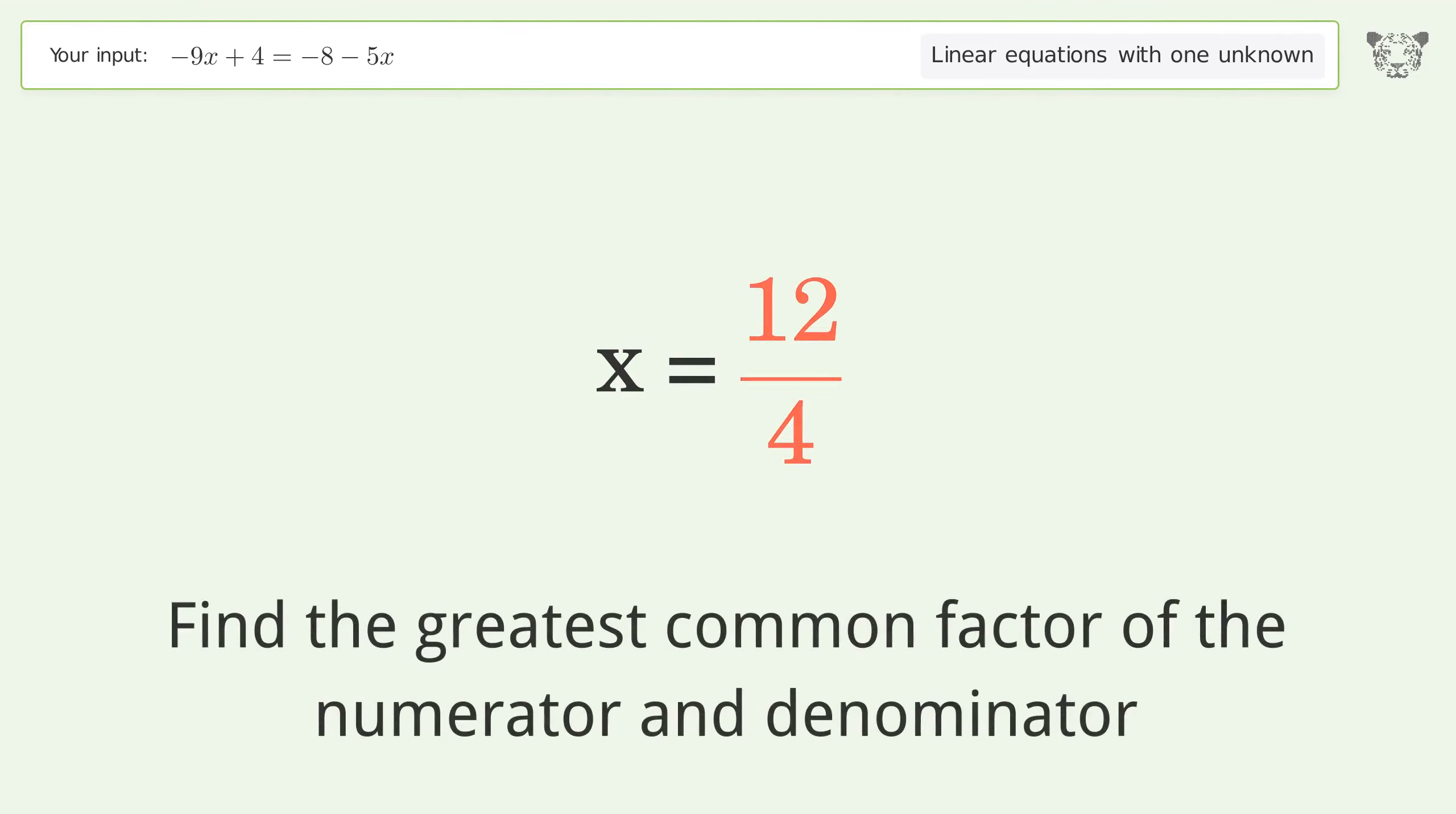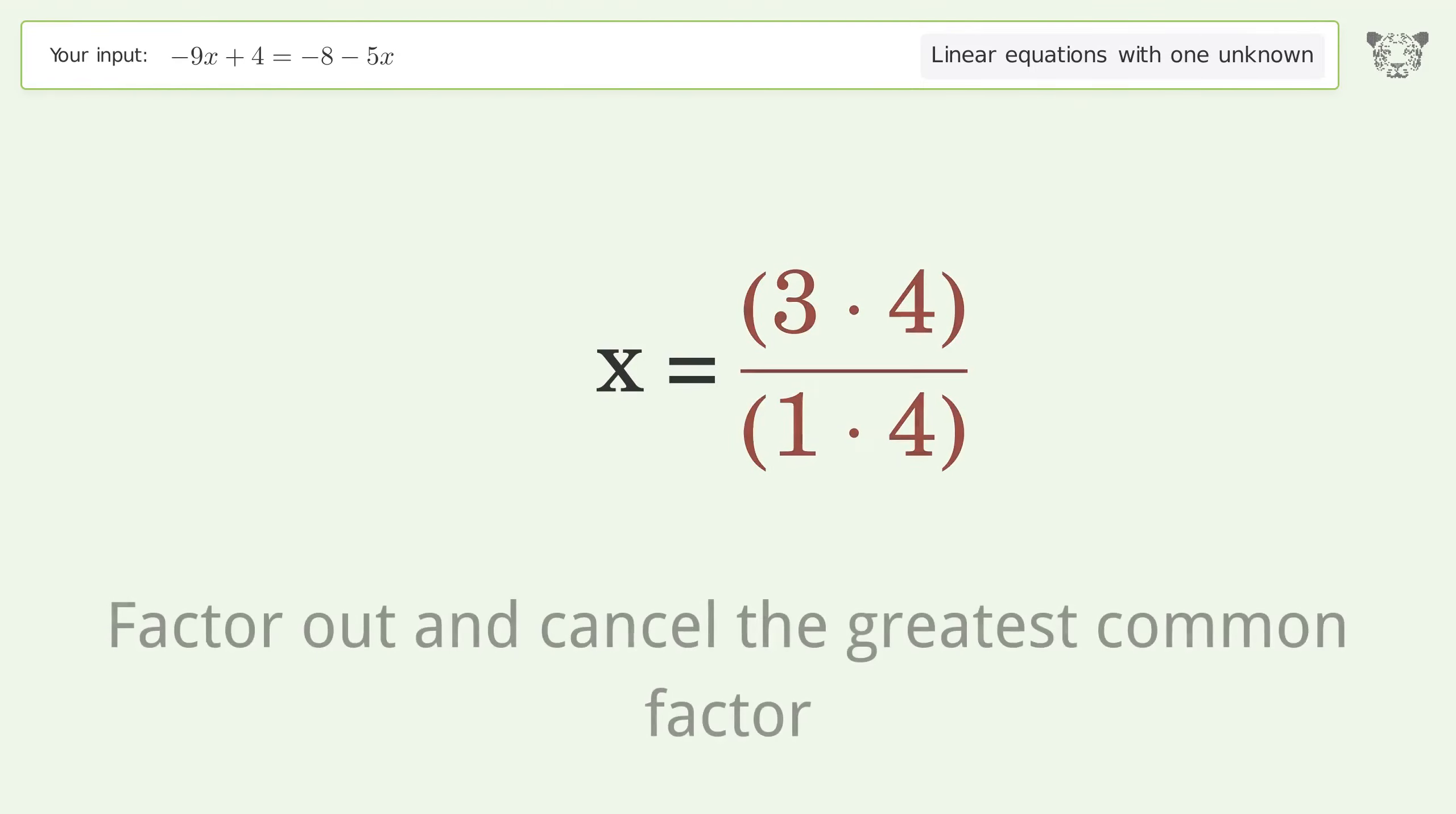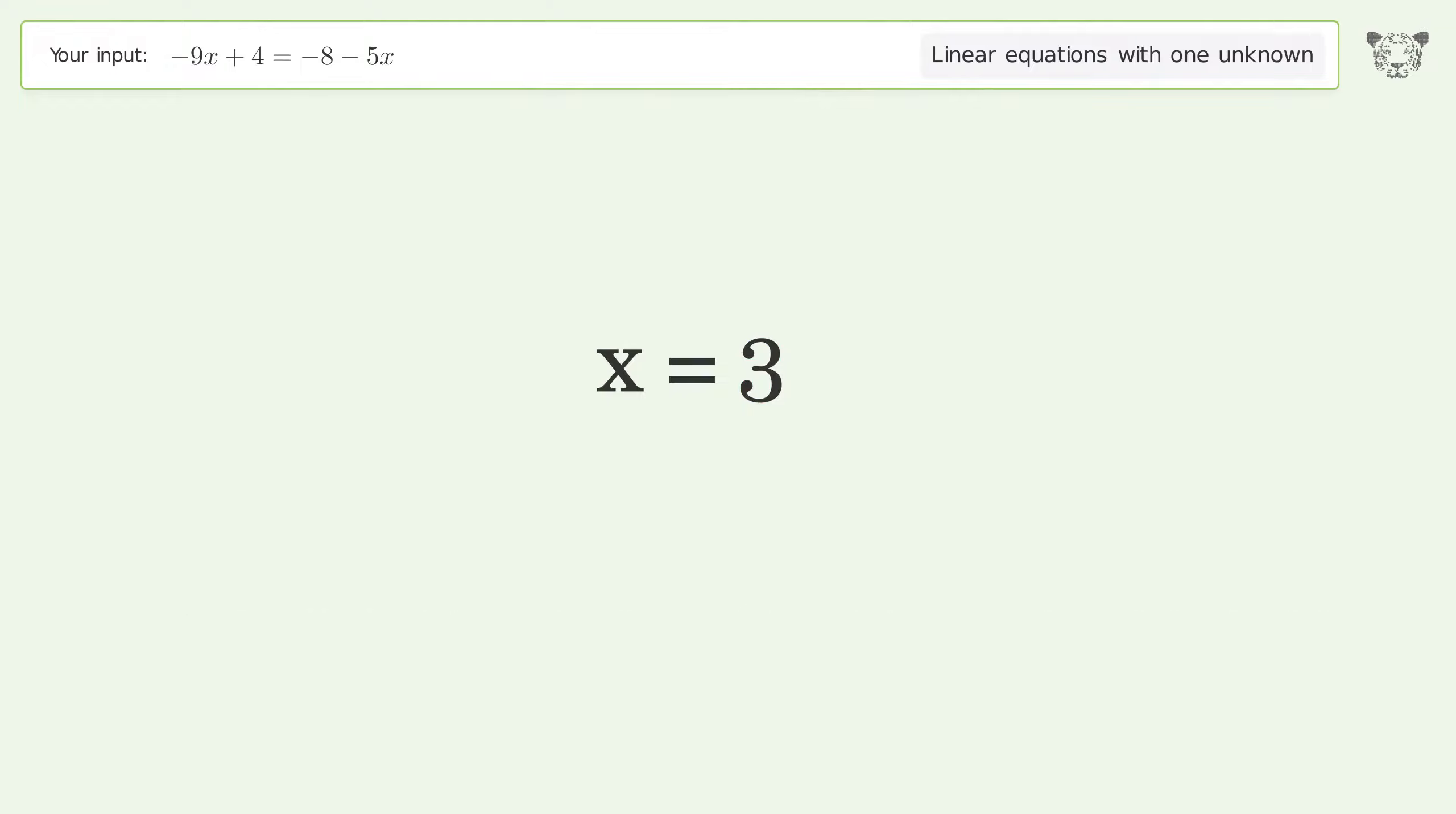Find the greatest common factor of the numerator and denominator. Factor out and cancel the greatest common factor. And so the final result is x equals 3.